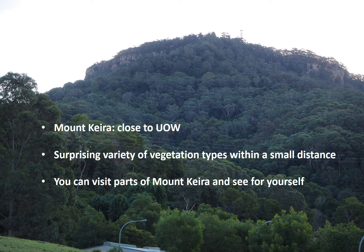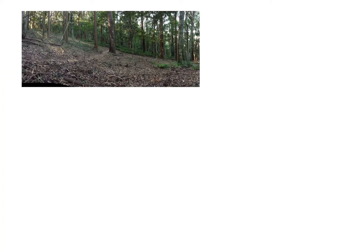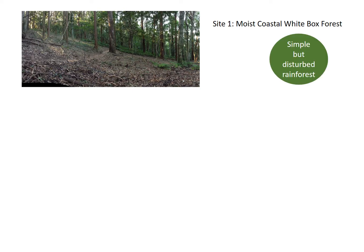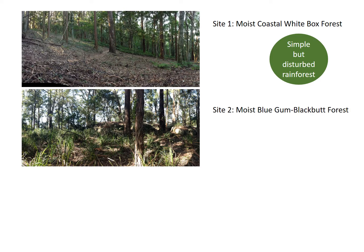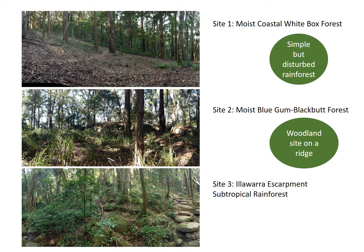You can visit parts of Mount Kira yourself as there are quite a few public footpaths. We're going to go to three sites. The first site is a moist coastal white box forest — it's a simple but disturbed rainforest. The second site is a moist blue gum blackbutt forest with quite a few different eucalypt species, a woodland site on a ridge. The third site contains a piece of Illawarra Escarpment subtropical rainforest, at the scout camp, and is an example of a more complex and rich rainforest.